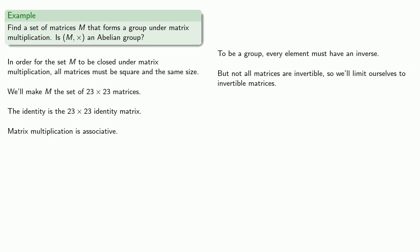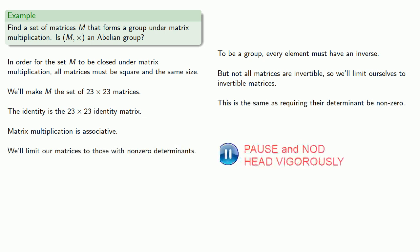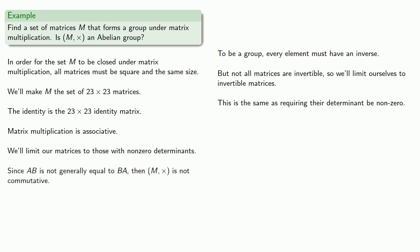And while we could just write that requirement into the set, let's go ahead and show that we've taken some linear algebra. This is the same as requiring the determinant be non-zero. And finally, we want to know whether we're dealing with an abelian group. And since AB is not generally equal to BA, at least not when we're dealing with matrix multiplication, then M times is not commutative.